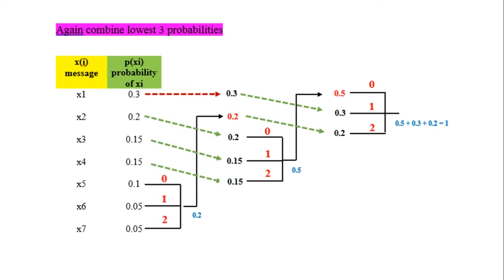Then again we combine the lowest three probabilities. The procedure is followed until we remain with three symbols at the end. We combine 0.5 plus 0.3 plus 0.2 to get the probability 1, and assign 0, 1, 2 to the final branches.